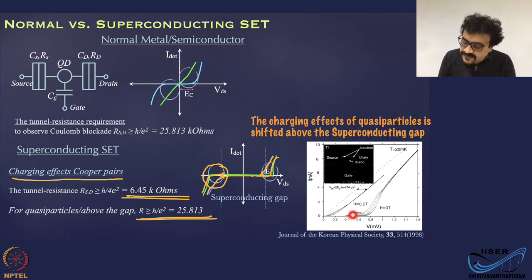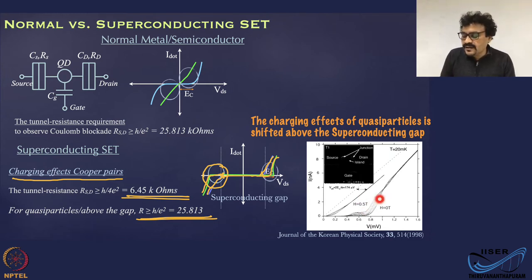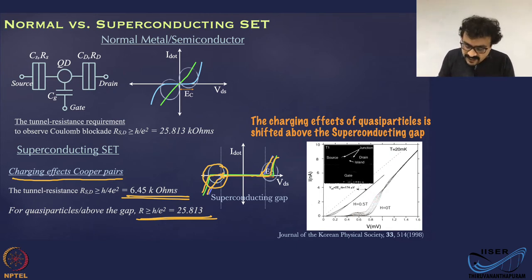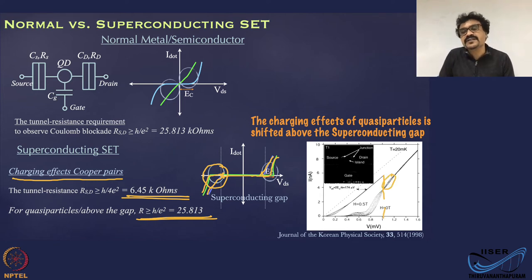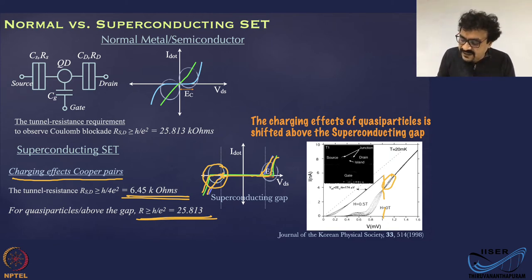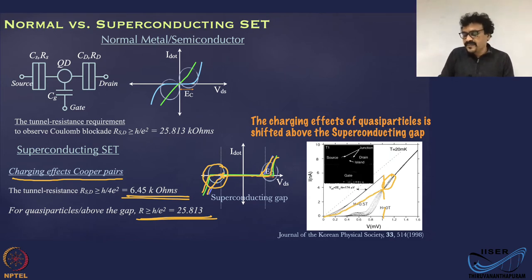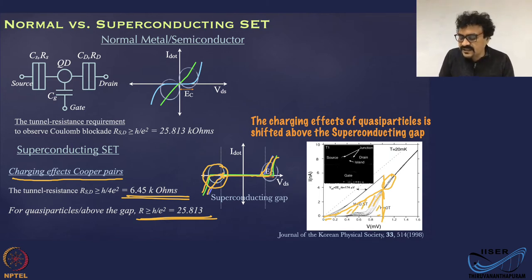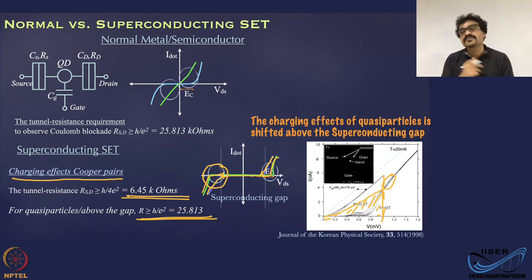The IV traces show the effect of charging effects of both Cooper pairs and quasiparticles. Whereas above the gap, the effect is because of the charging effect of electrons or quasiparticles. The moment you apply a magnetic field, you can see that the whole IV has been shifted back — the feature that you see within the sub-gap region involves transport mechanisms of both Cooper pairs and quasiparticles.